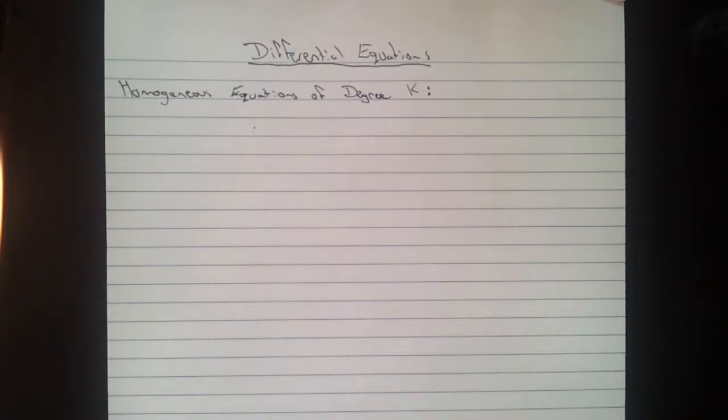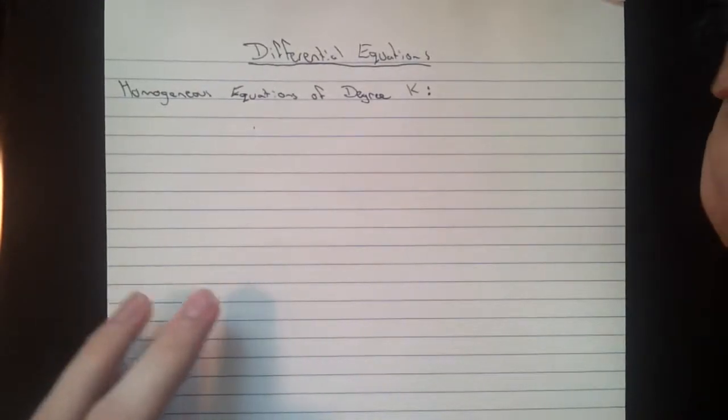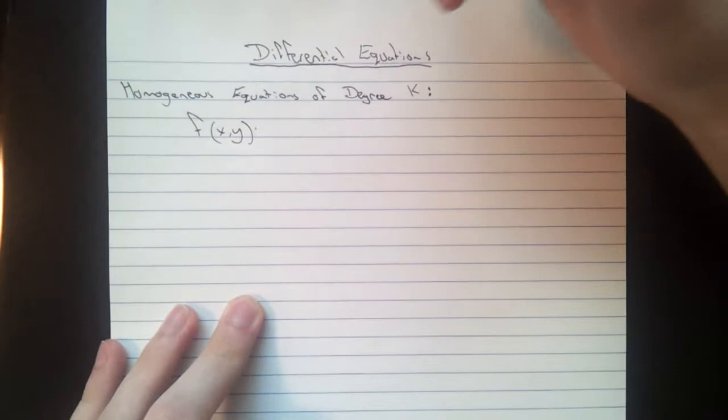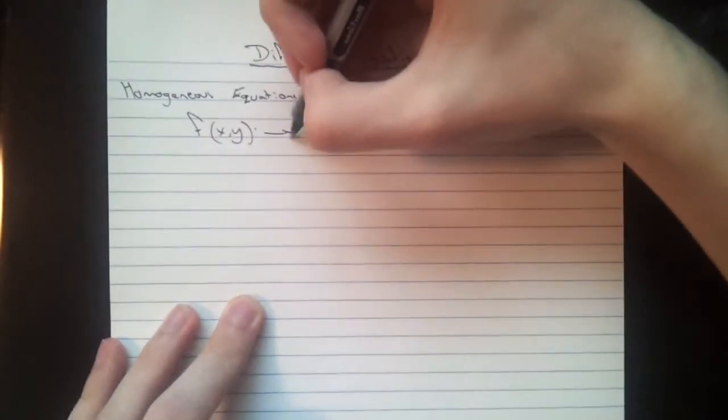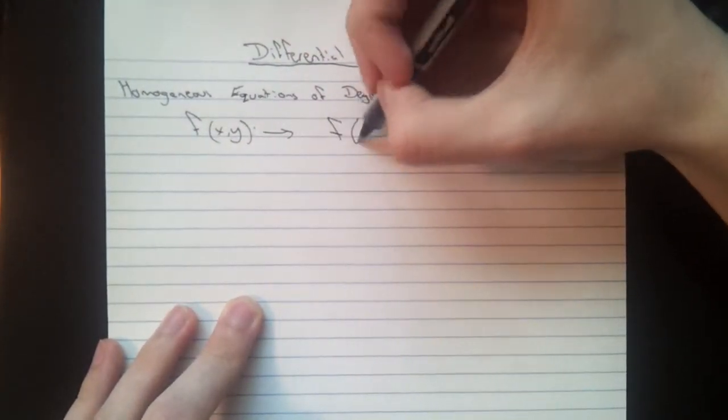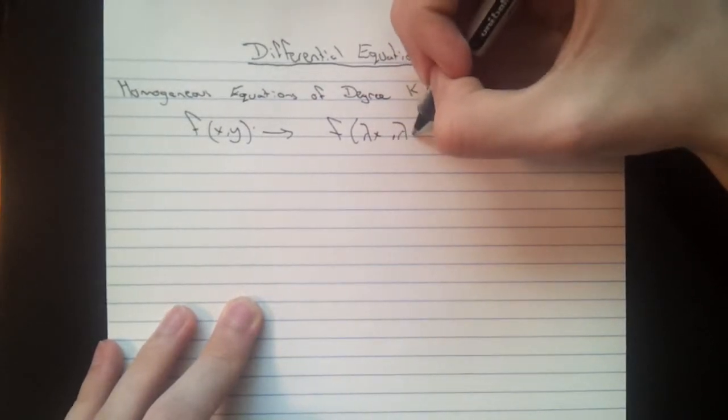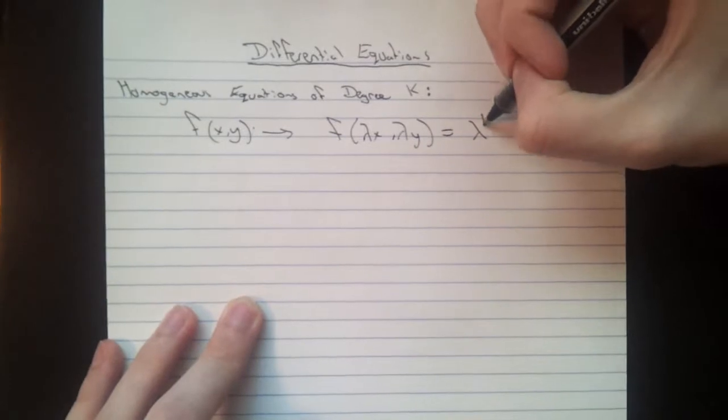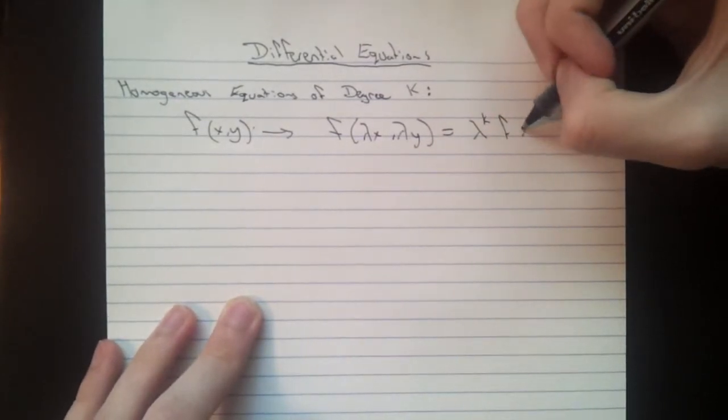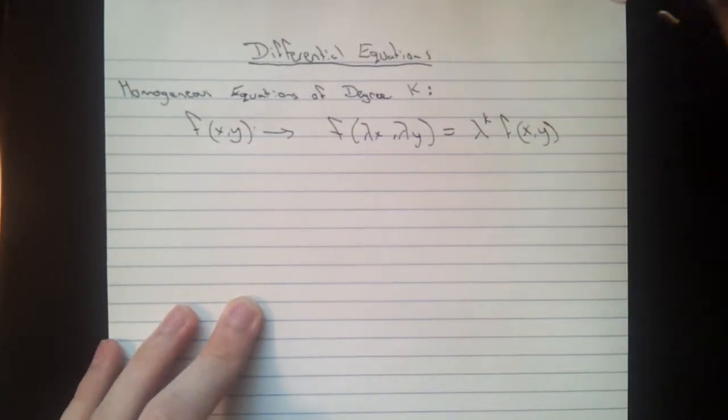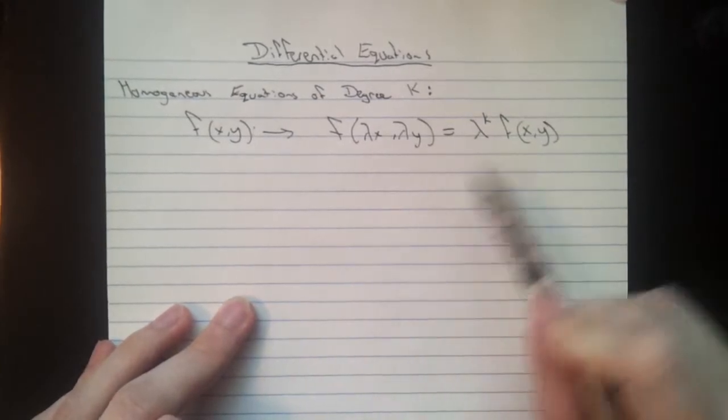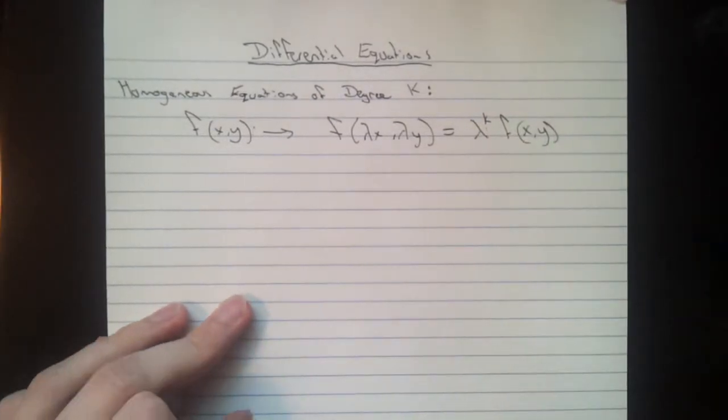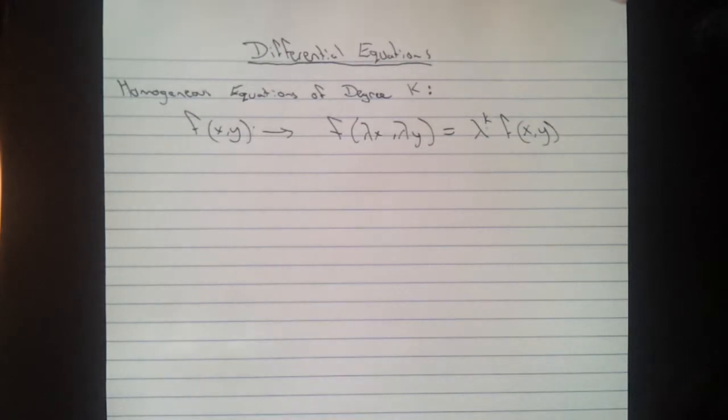Okay, so we're doing homogeneous equations of degree k. Basically what this means is if you have f at x and y, and you take f at lambda x, lambda y, you can pull that lambda out and get lambda to the k times f at x and y. You got yourself a homogeneous equation of degree k, and that k can be positive, negative, zero, whatever you like.